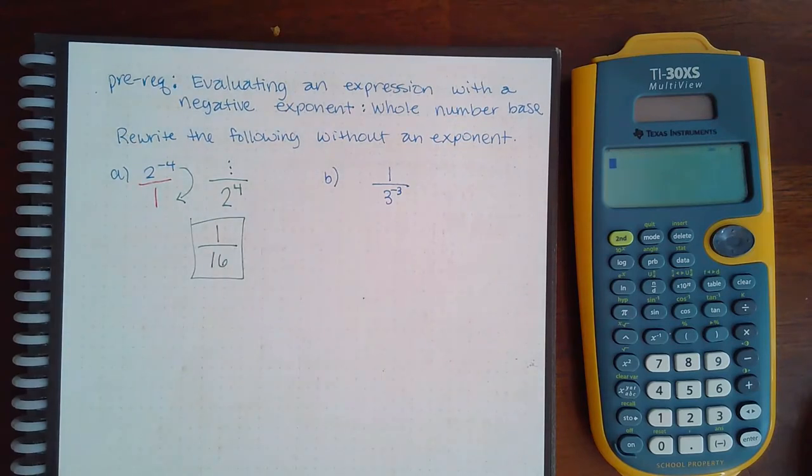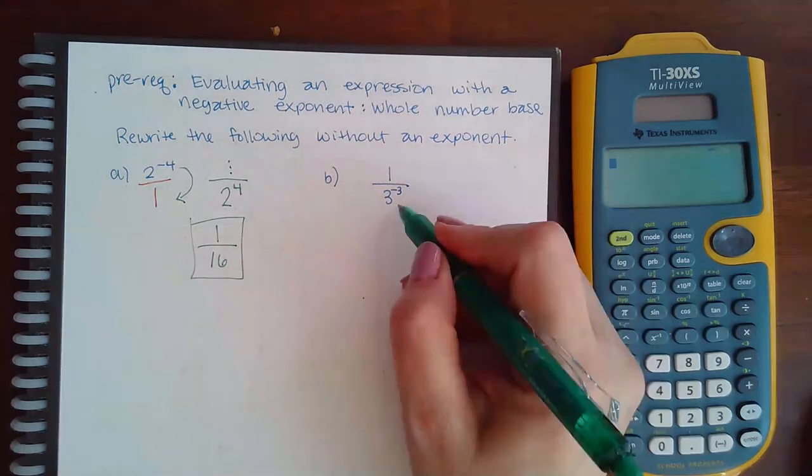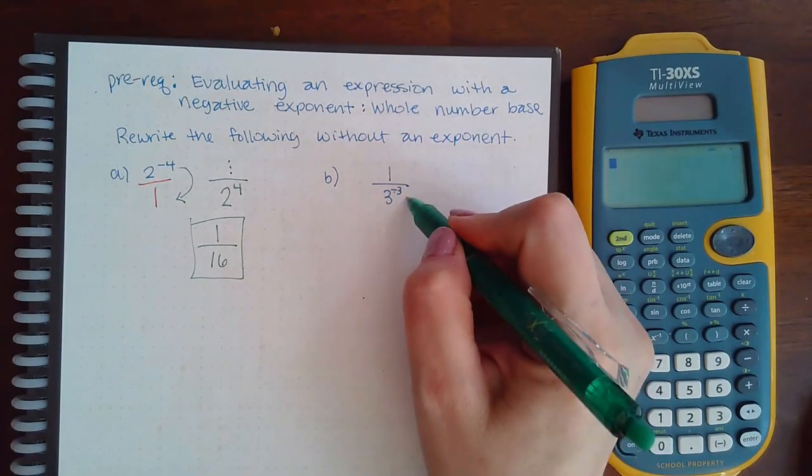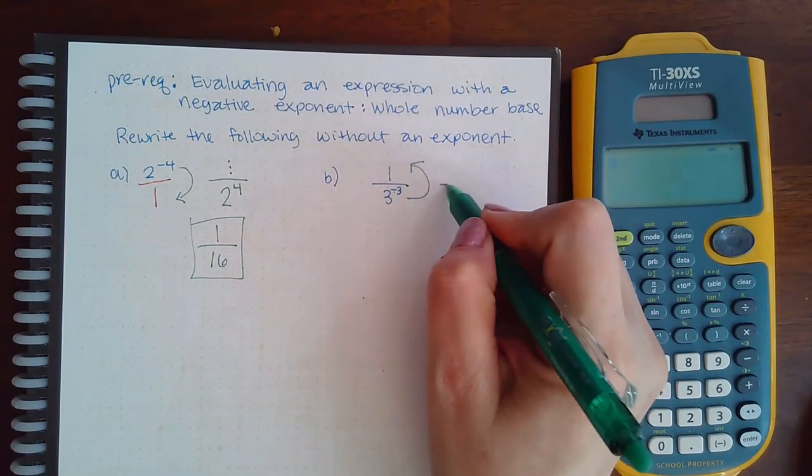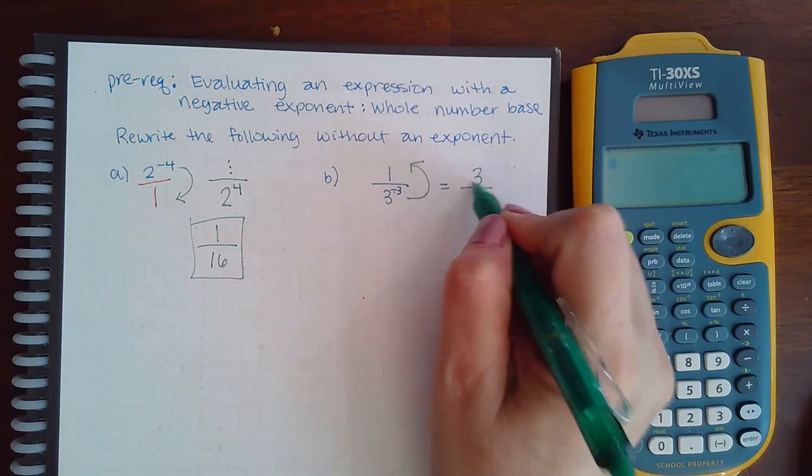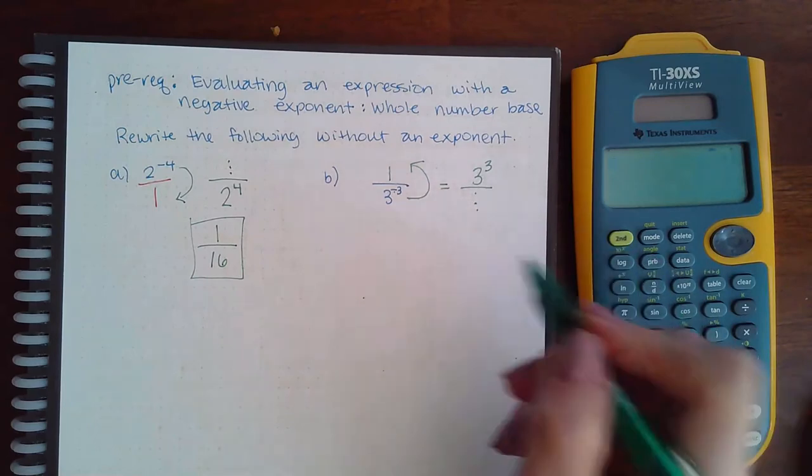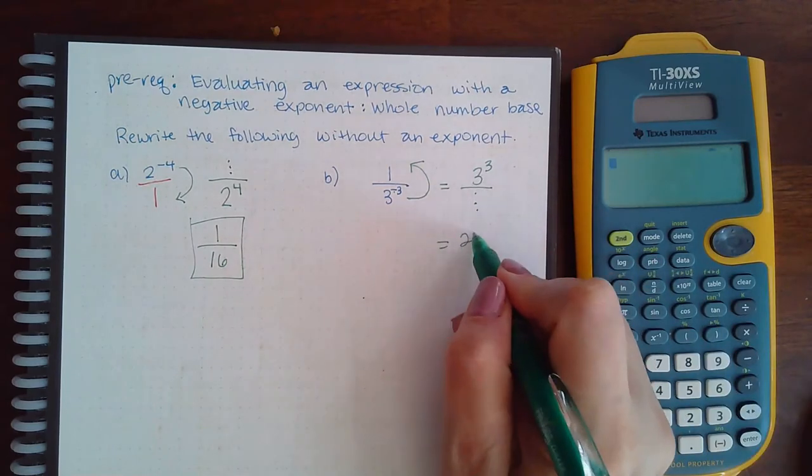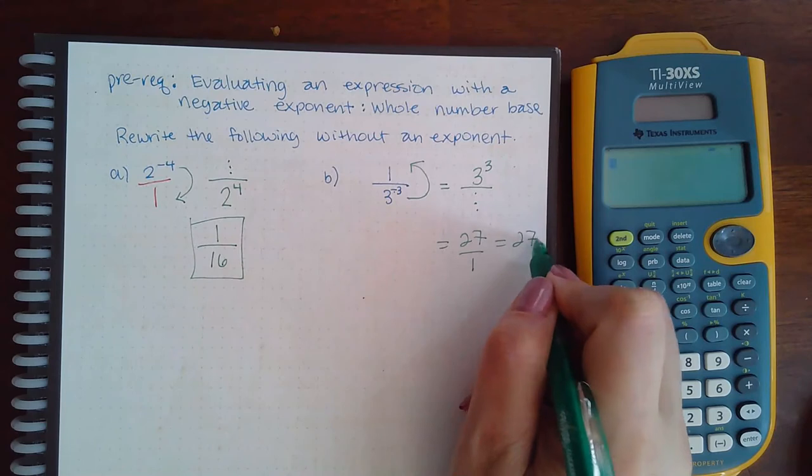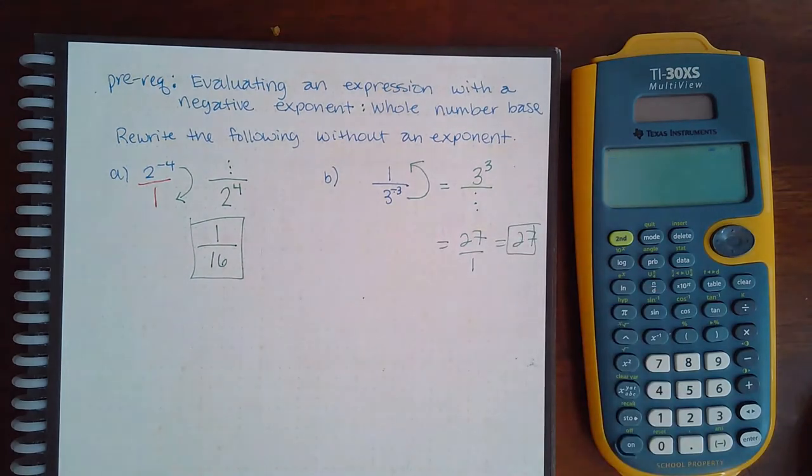And now I no longer have the exponent. Same thing with this: because it's a negative, it's going to move that term to the top. So this becomes three to the positive third power, and again, the little invisible one. Three to the third power is 27 over one, which is just 27, and that is the number written without the exponent.